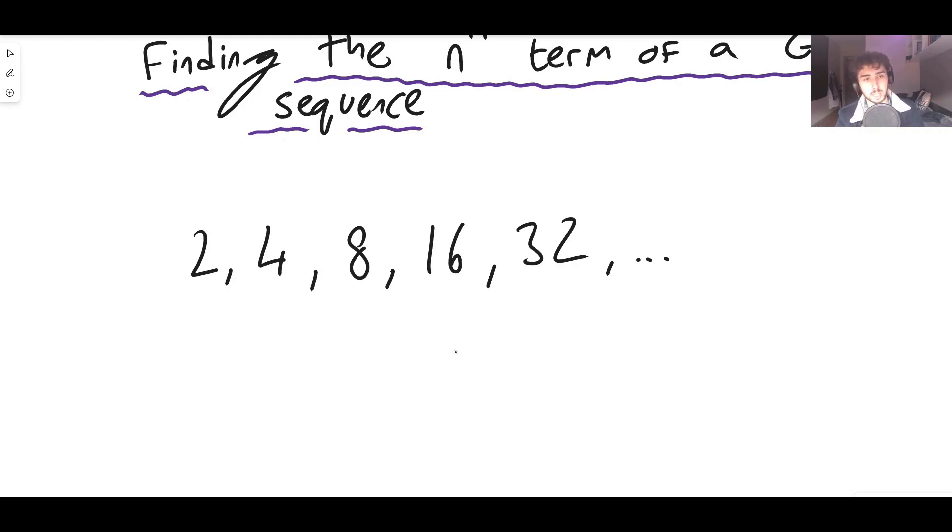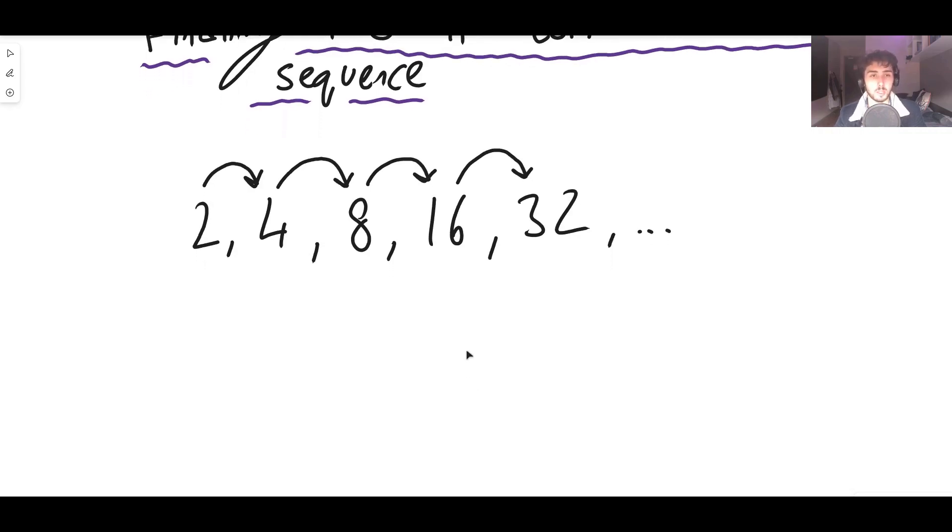Geometric though, the difference between each term is not a constant but it is multiplicatively a constant. It's 2. You're doubling every term. So this would be a geometric sequence. Notice I just times by 2 to get to each one.